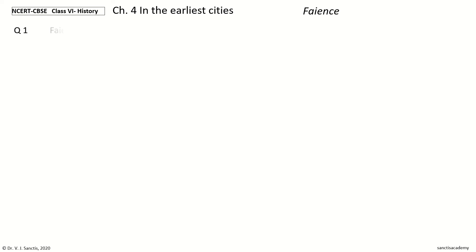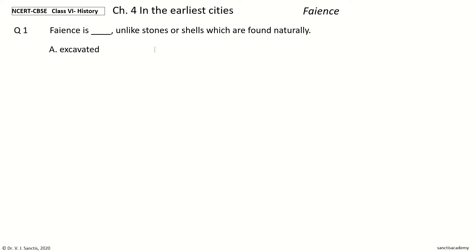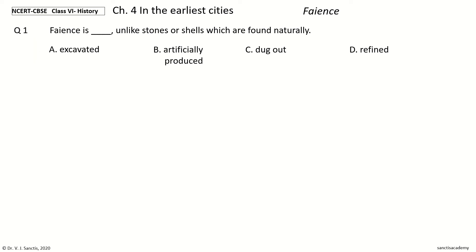Question 1. Faience is dash, unlike stones or shells which are found naturally. The options are: excavated, artificially produced, dug out, refined. And the answer is artificially produced. So, Faience is artificially produced, unlike stones or shells which are naturally found.